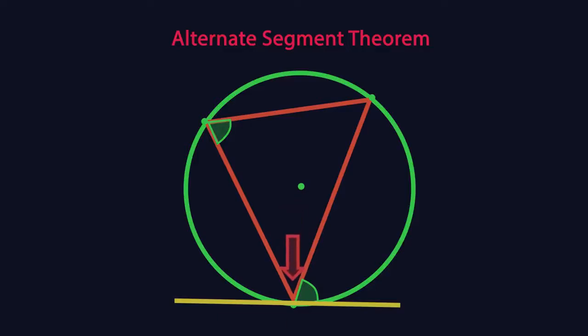So it can't be this angle because it's next to it, and it can't be this angle because it's on the same line. So that means it has to be this angle. The alternate segment theorem.